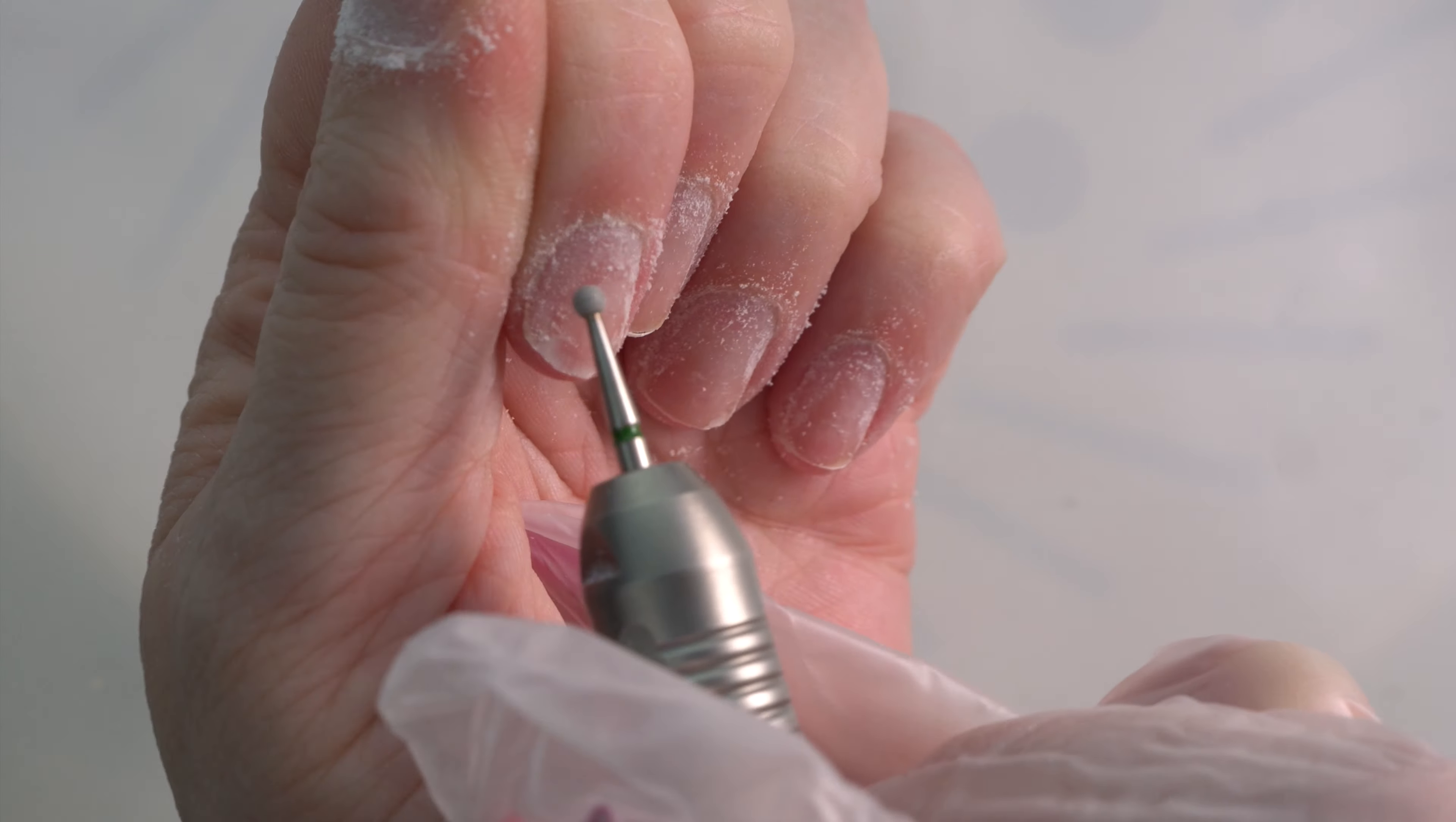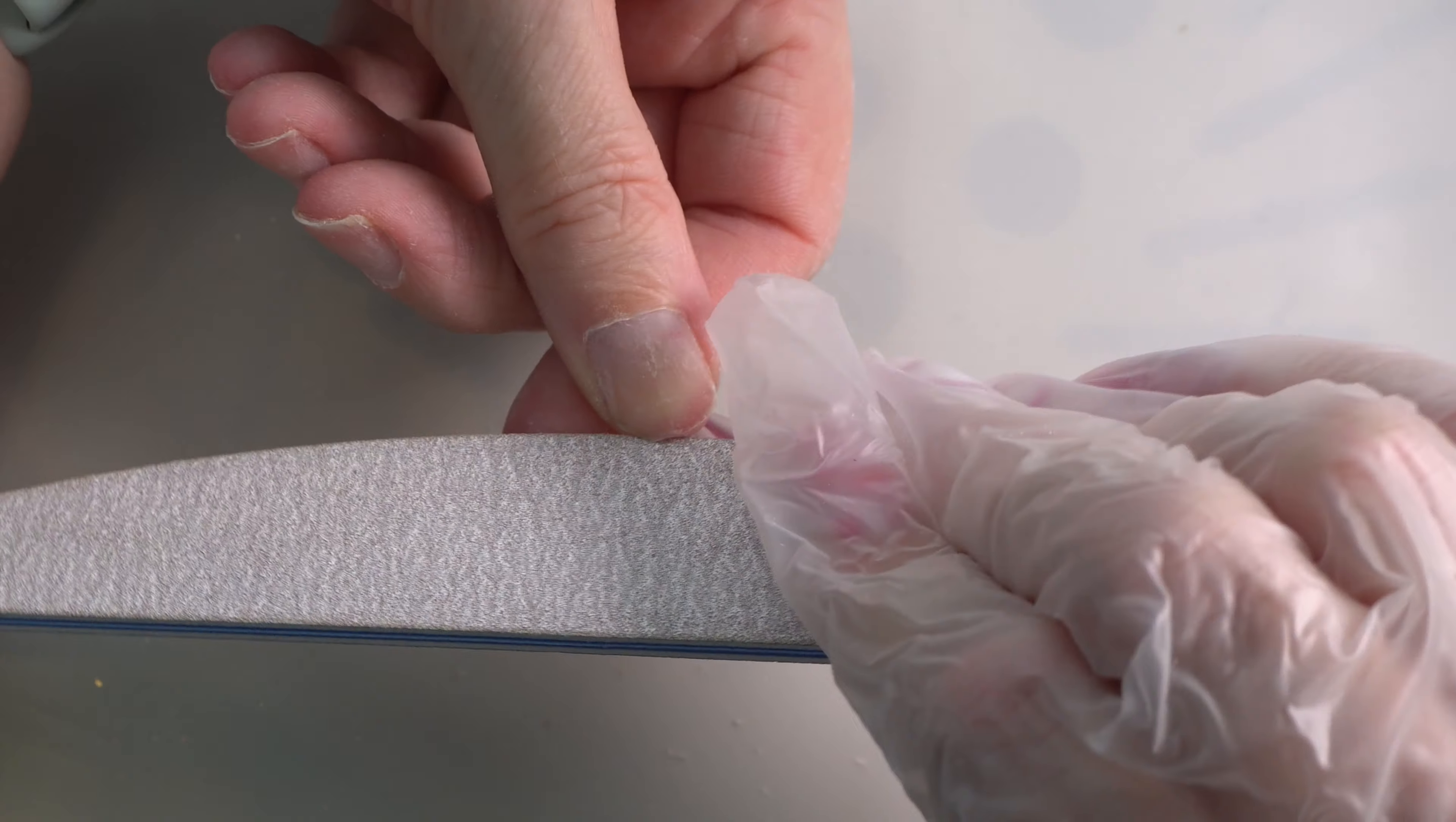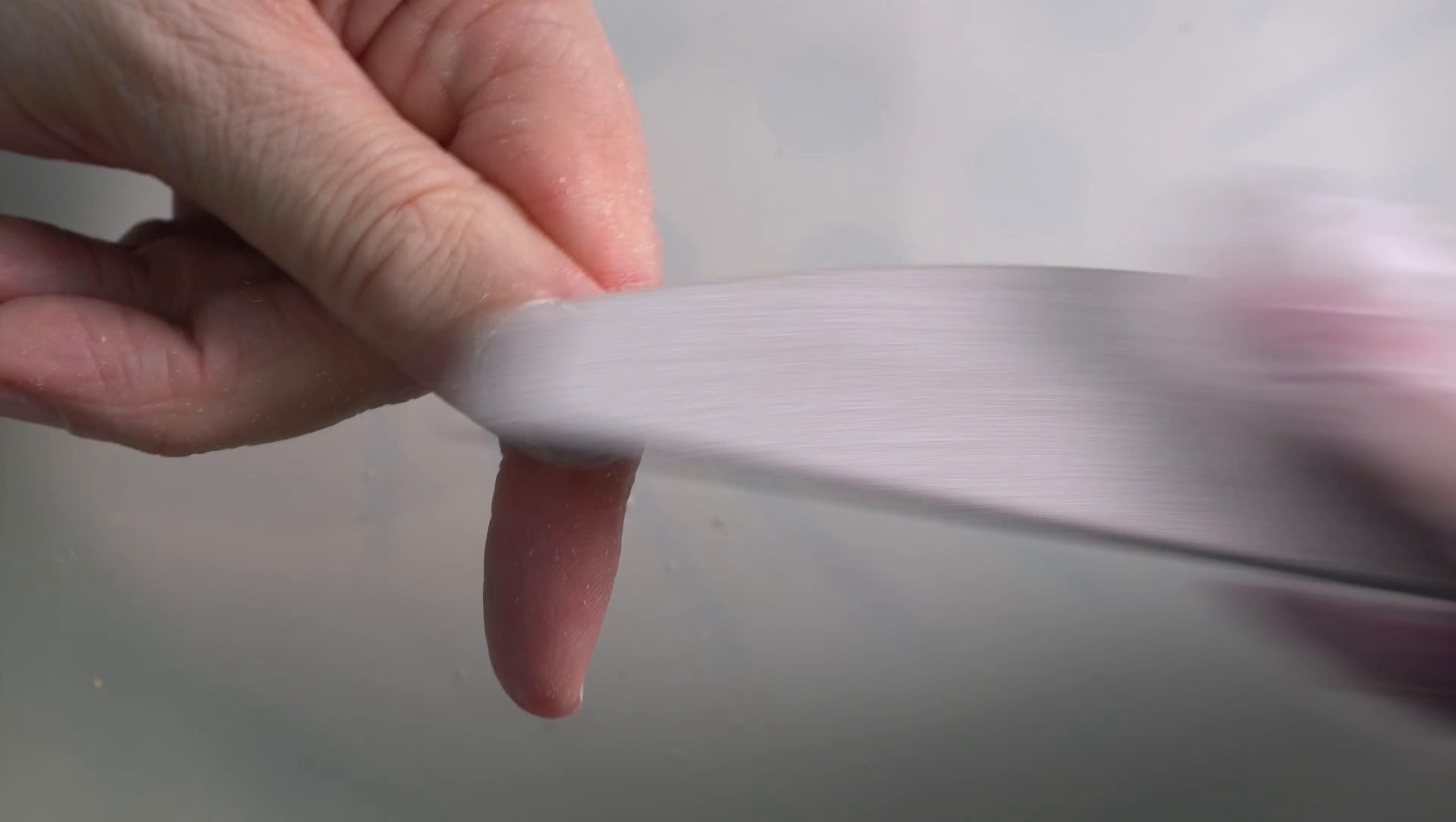Once we've done that, we're going to come in with a normal nail file or an emery board and give the nails a file, making sure we're just going in one direction. Once we're happy with that, we're then going to go over the nail plate because this is important for any enhancements you're using to adhere—it needs a grip on there.